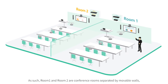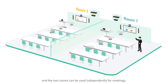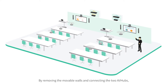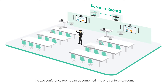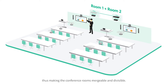Room 1 and room 2 are conference rooms separated by movable walls, and the two rooms can be used independently for meetings. By removing the movable walls and connecting the two AV Hubs, the two conference rooms can be combined into one, making the conference rooms mergeable and divisible.